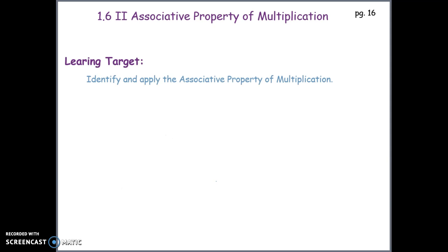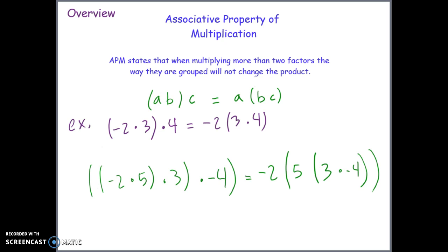This is very similar to the associative property of addition, except now we are grouping factors differently, not terms. The associative property of multiplication states that when multiplying more than two factors, the way they are grouped will not change the product. So no matter how we group what's being multiplied, the outcome will always be the same.